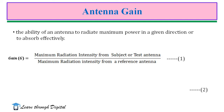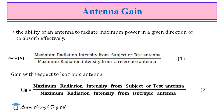The subject antenna means the antenna under consideration for performance analysis — the antenna under test, our own antenna. The reference antenna is a standard antenna, namely the isotropic antenna. An isotropic antenna is a hypothetical lossless antenna that radiates energy equally in all directions. Gain with respect to the isotropic antenna is defined as G0, equal to the maximum radiation intensity from the subject antenna divided by the maximum radiation intensity from the isotropic antenna.